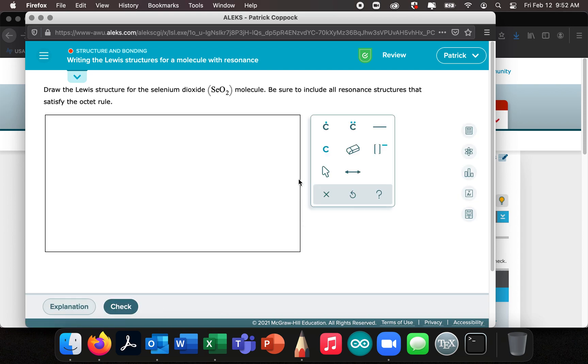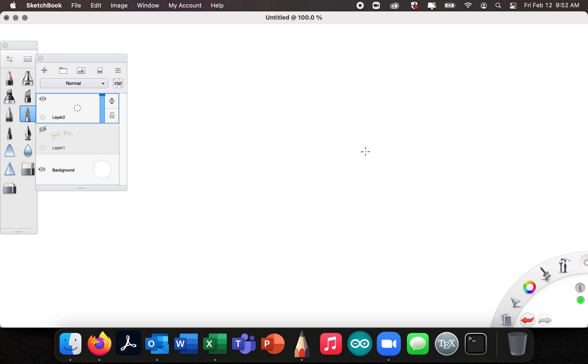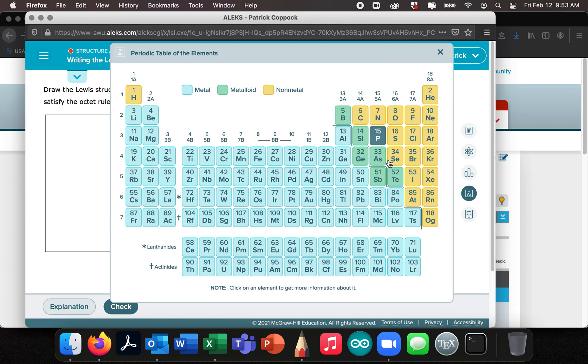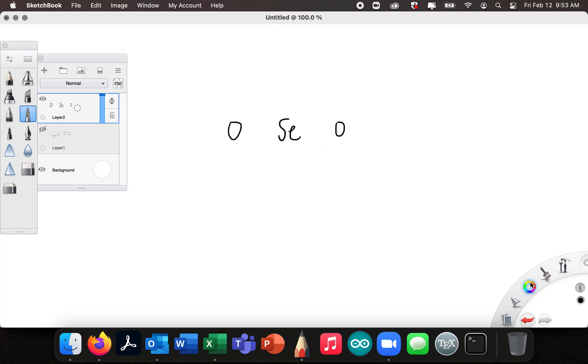More practice. All right. Selenium dioxide, SeO2. Going to go kind of fast. So let's just open up a new layer. Selenium dioxide. I actually don't know where selenium is. So we've got to go and see what group that's in. Selenium is right there. Okay, so it's in the same group as oxygen. So it's in group six. It's going to have six valence electrons. Let's draw those up there.